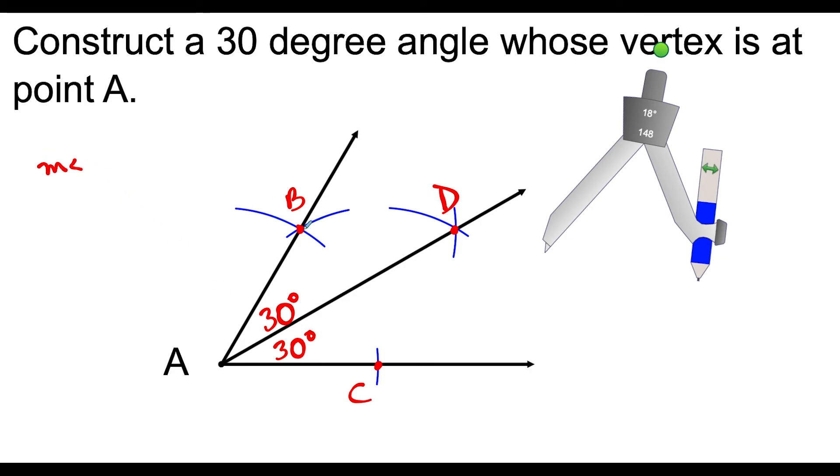I could say the measure of angle BAD, so the measure of angle BAD is 30 degrees. Or I could say here the measure of angle CAD is equal to 30 degrees.